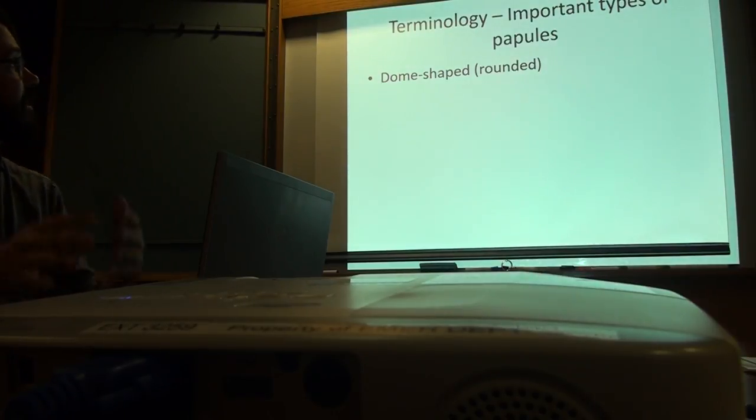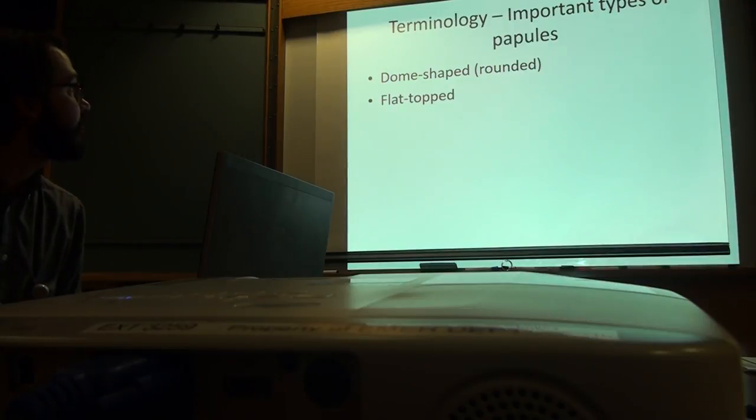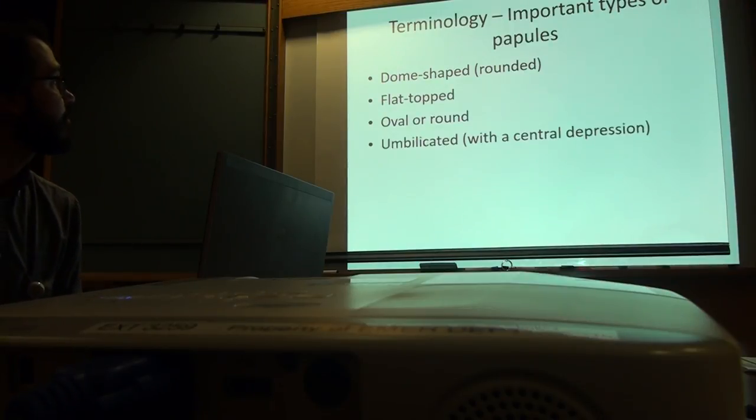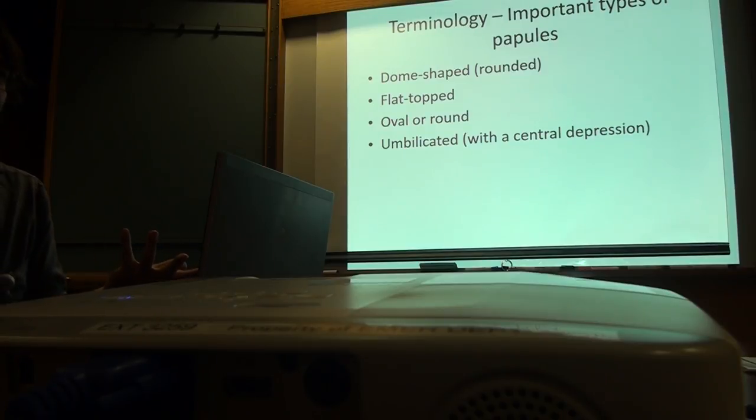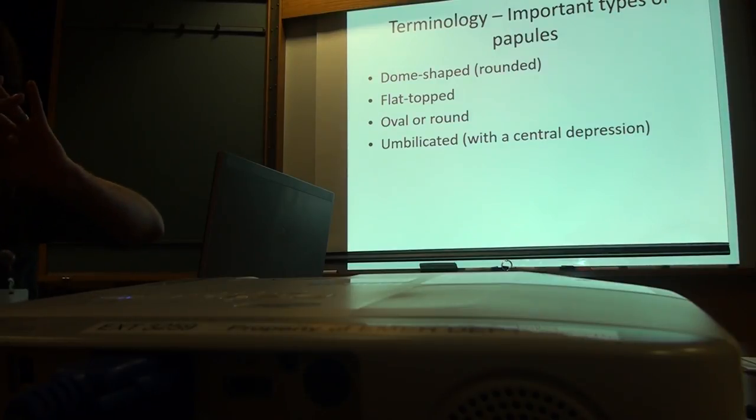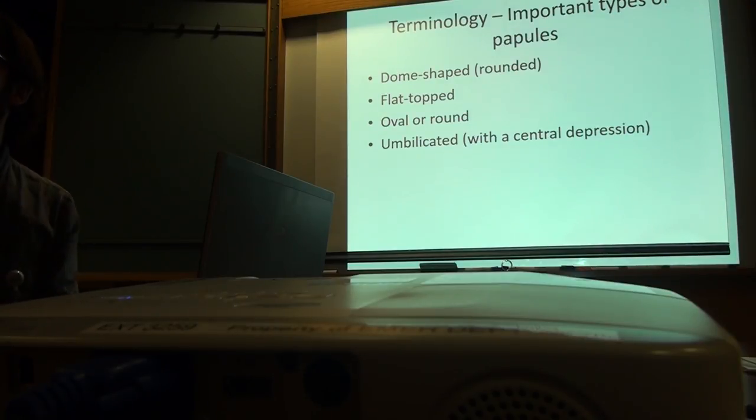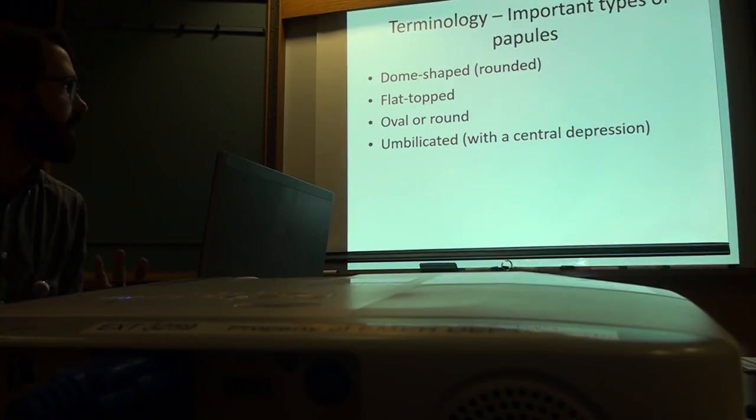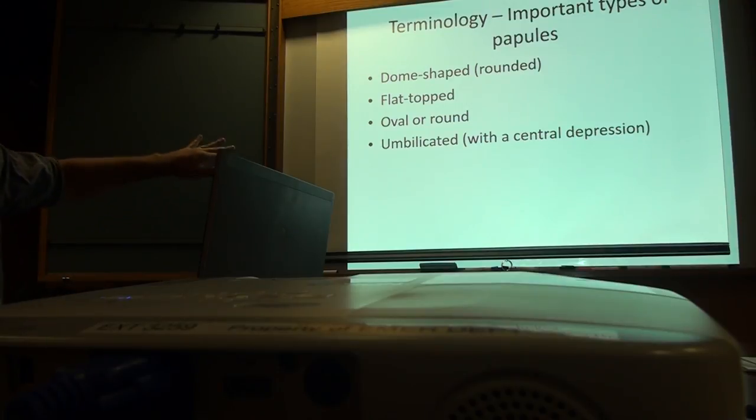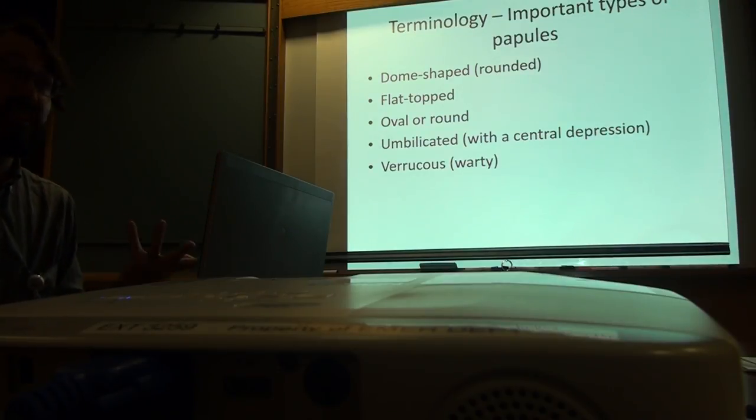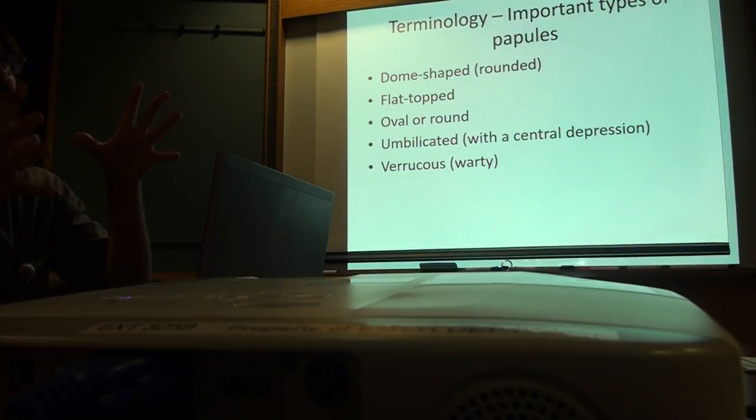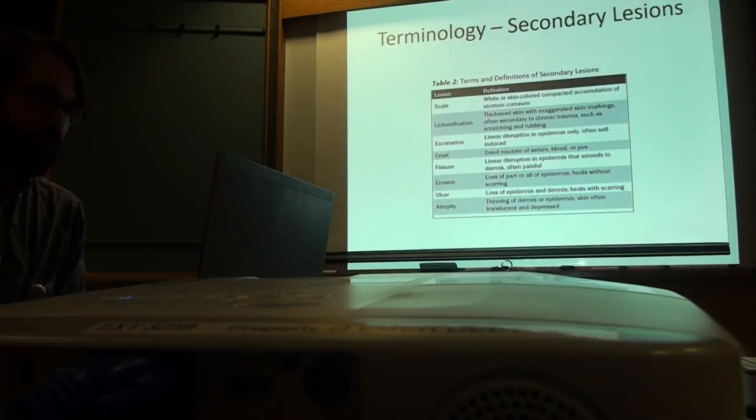Important types of papules - there's dome-shaped, flat-topped, oval or round, and umbilicated ones. Anyone know an example of an umbilicated papule? It's like a little papule with a belly button in it, a central depression, like an insect bite or molluscum. Verrucous describes kids with little warts on their skin, heaped up papules or little growths.